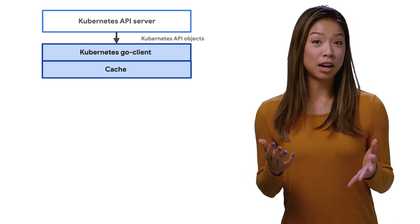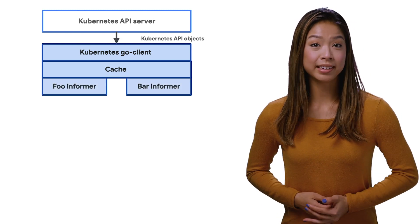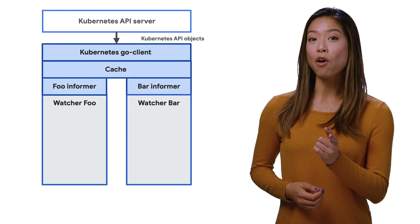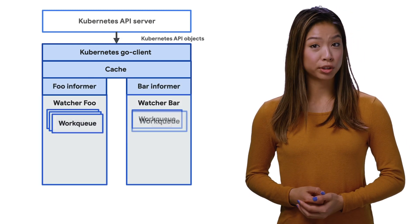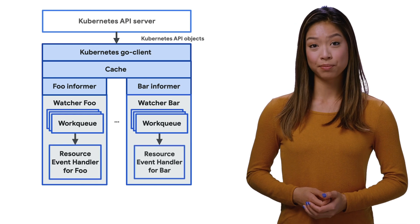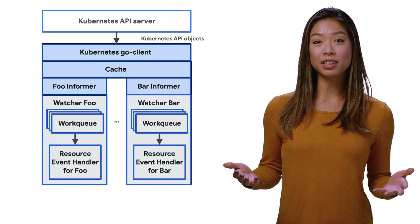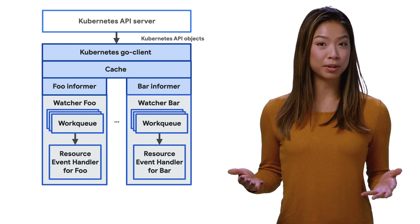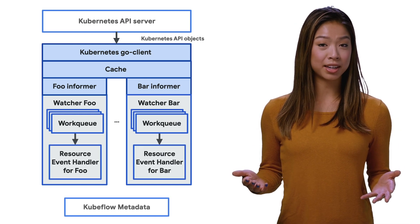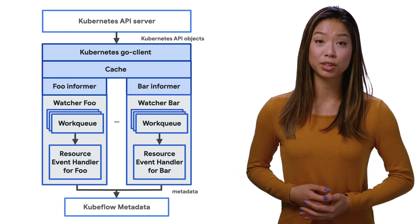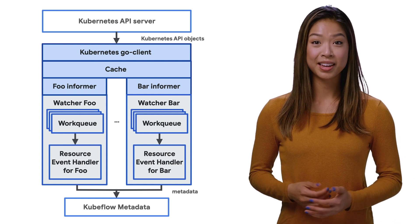Besides using the SDK to log metadata directly, you can also add your own metadata watcher to watch Kubernetes resource changes. It extracts metadata from some Kubernetes API objects and logs them to the KUBEFLOW metadata service. To learn more and try out this notebook and explore its metadata, check out the links below, and stay tuned to learn more.